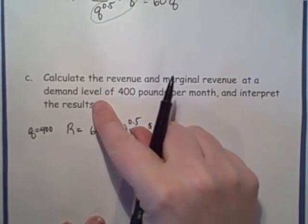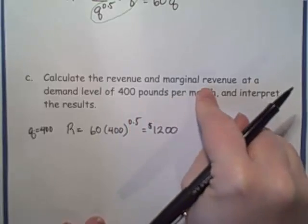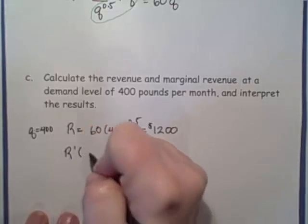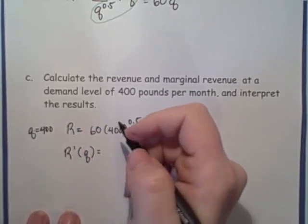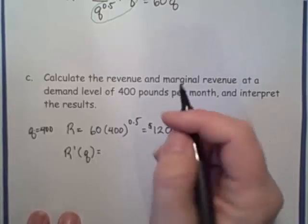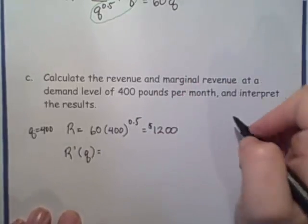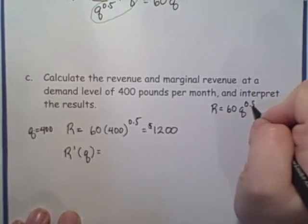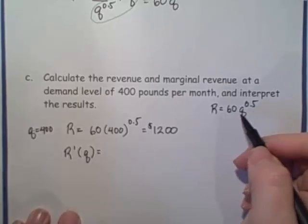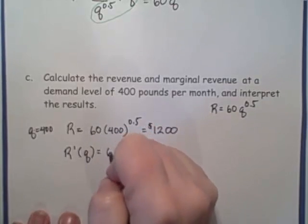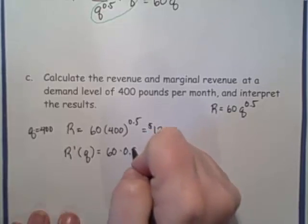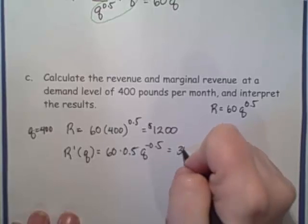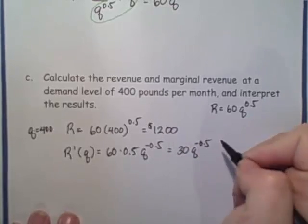Okay, now we are supposed to calculate the marginal revenue. So let's first calculate the marginal revenue function. R prime of Q, we're going to take the derivative of our revenue function. Our revenue function, remember, is 60 times Q to the 0.5. If we take the derivative of this function, we're going to have 60 times 0.5 Q to the negative 0.5. So that gives us 30 Q to the negative 0.5.